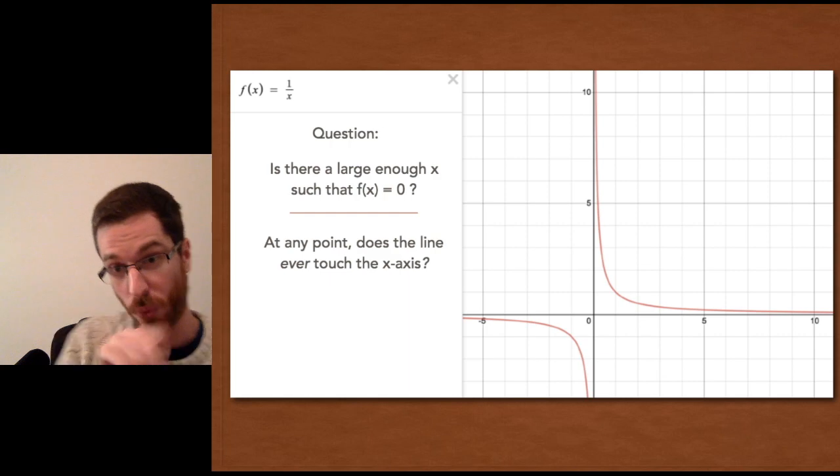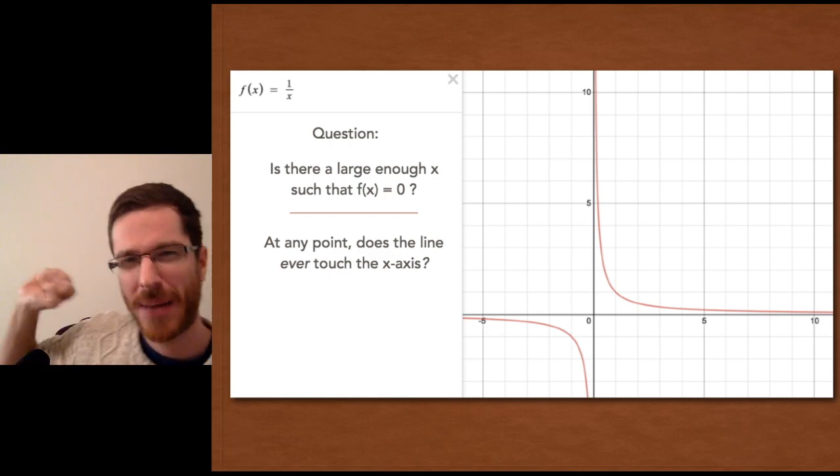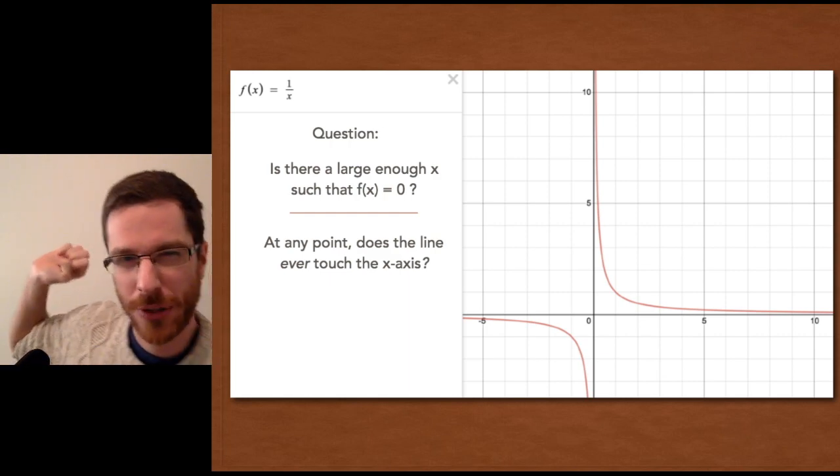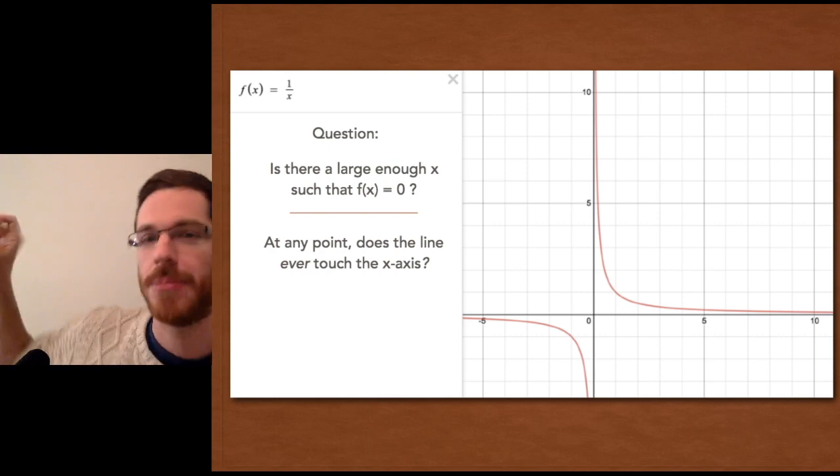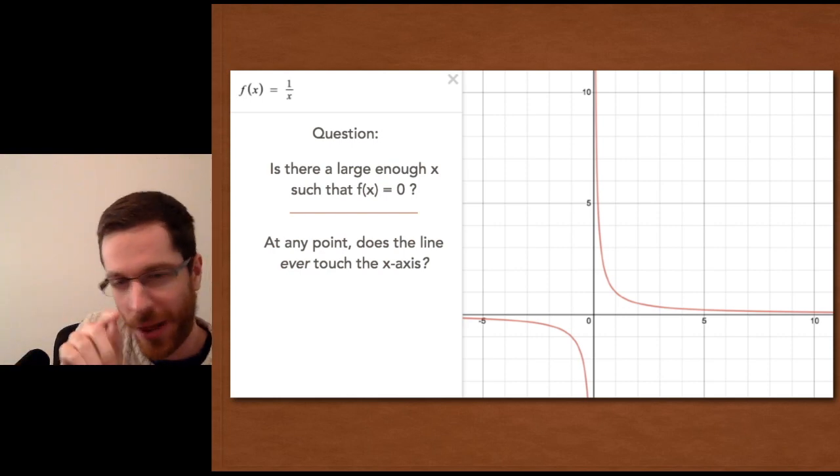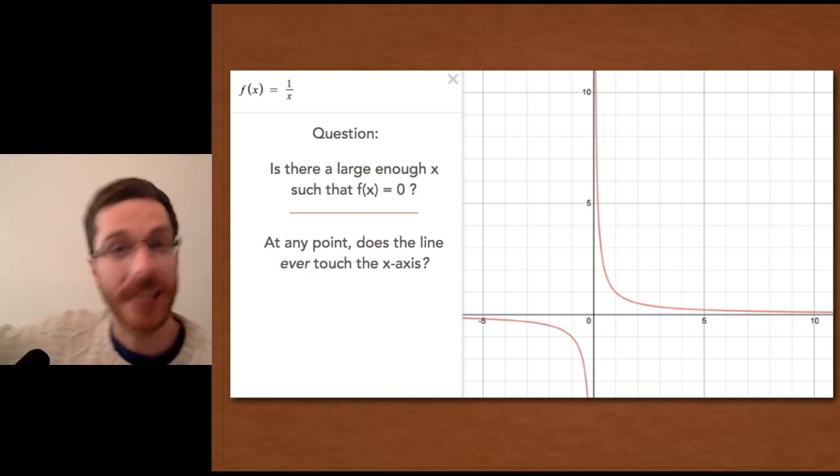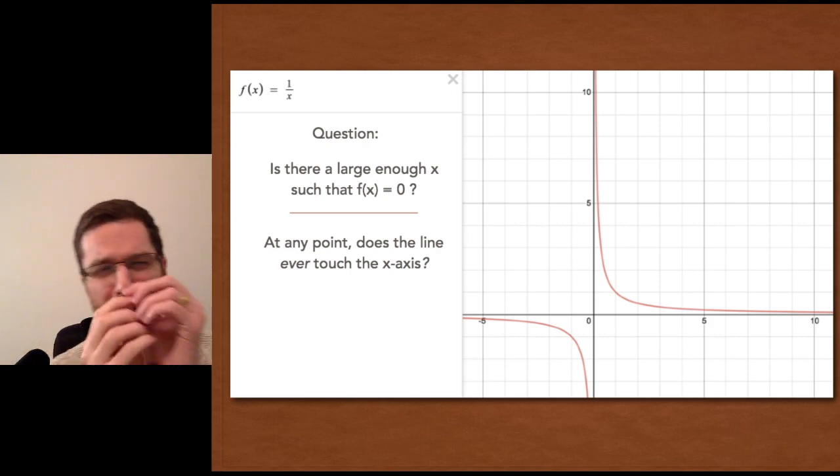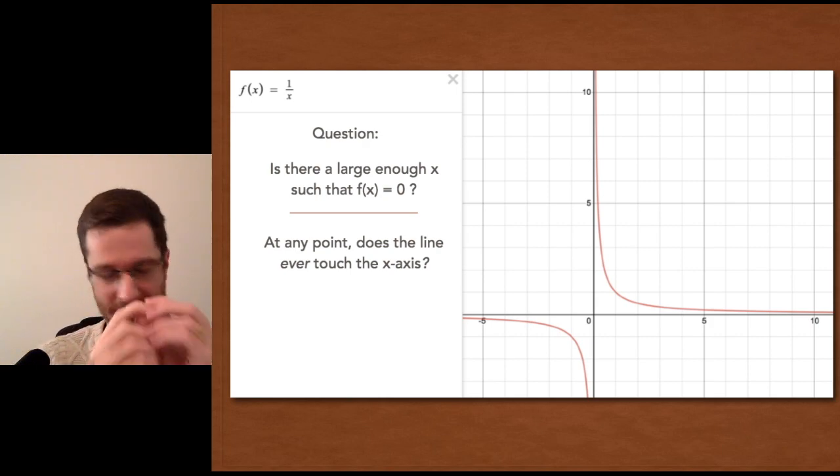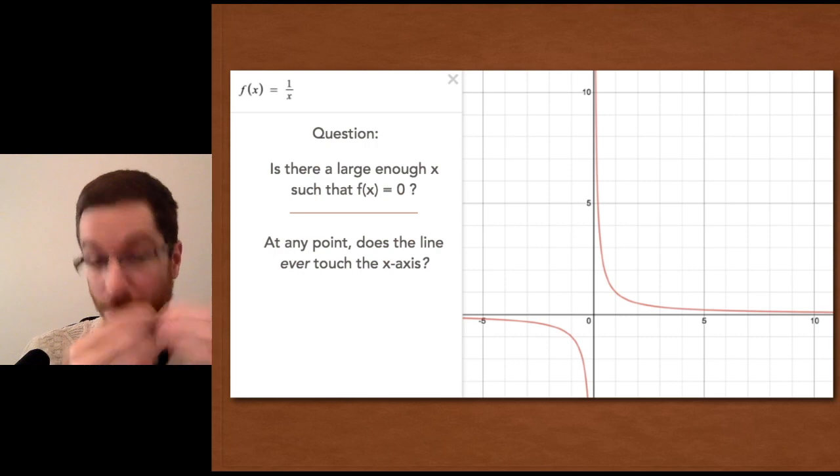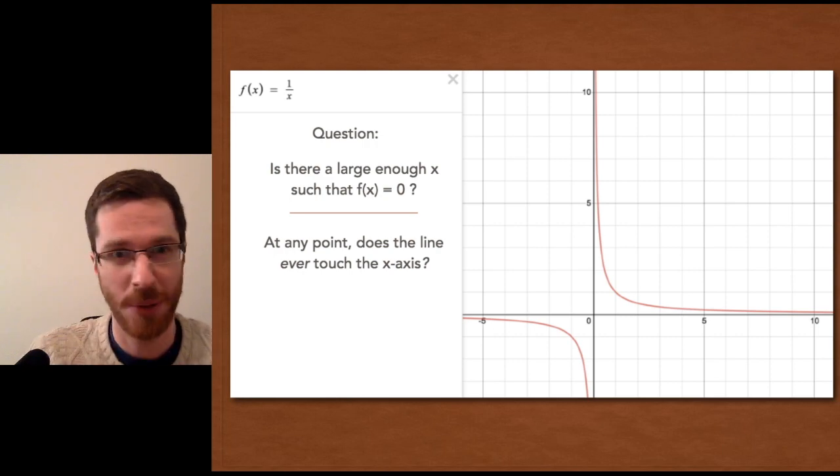If you look at that graph, it goes way out to the right. You can imagine we're inputting 100 trillion trillion trillion into the function. And what comes out is one trillion trillion trillionth. Which is going to be so close to the x axis as to be practically there for useful purposes.